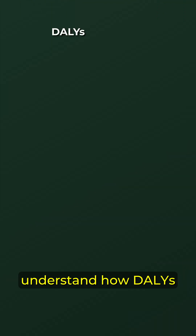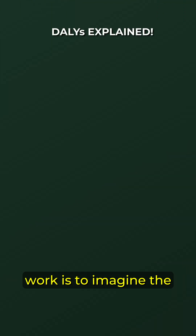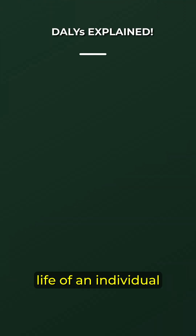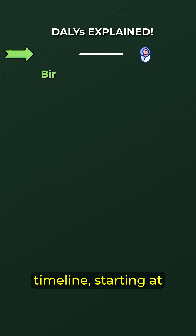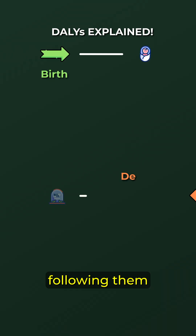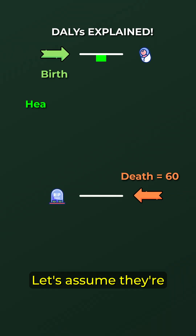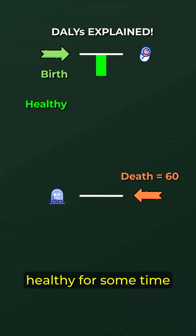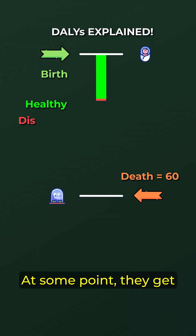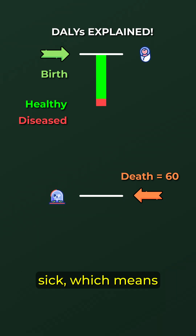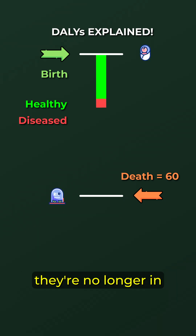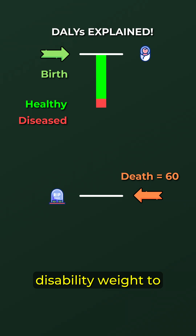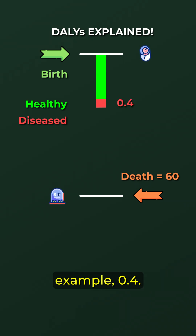A great way to understand how DALYs work is to imagine the life of an individual visualized on a timeline, starting at their birth and following them until they die. Let's assume they're healthy for some time after they're born. At some point they get sick, which means they're no longer in perfect health, so we need to assign a disability weight to that time, for example 0.4.